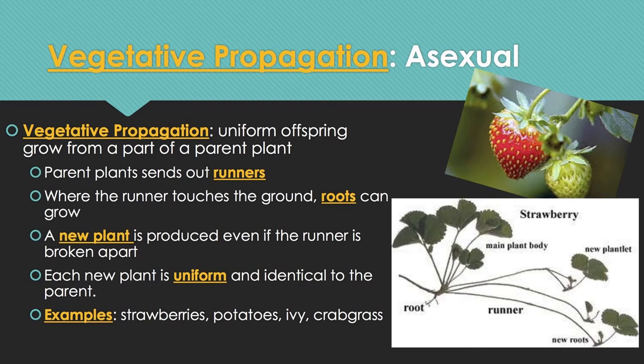Another form of asexual reproduction is vegetative propagation, which is all about plants. Uniform offspring grow from a part of a parent plant. For example, a strawberry plant sends out runners — little branches along the ground — and where a runner touches the ground, roots grow and a new plant is produced. Each new plant is identical to the parent. Strawberries, potatoes, ivy, and crabgrass all grow this way. Farmers and gardeners also use plant cuttings to grow new organisms.